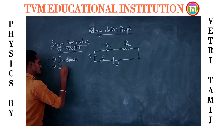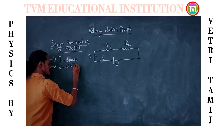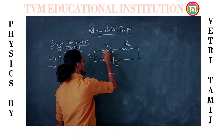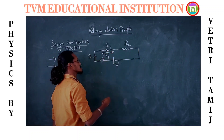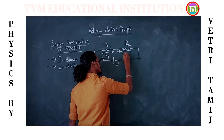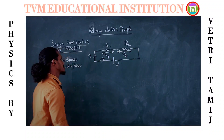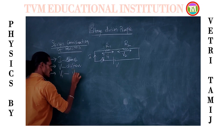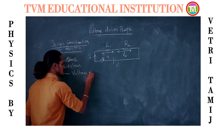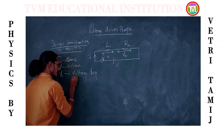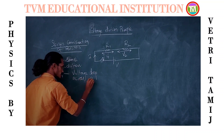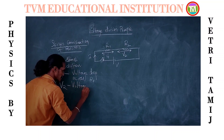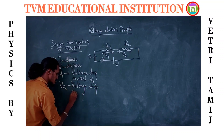But what changes is the voltage. The voltage differs — in the sense that across each resistor, some portion of voltage drops. V1 is simply the voltage drop across R1, and V2 is nothing but the voltage drop across R2.